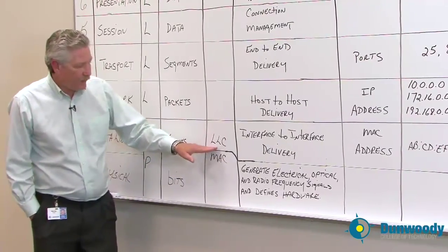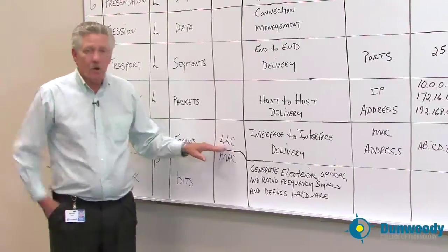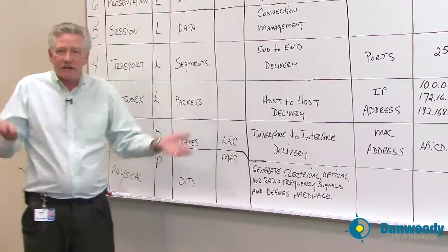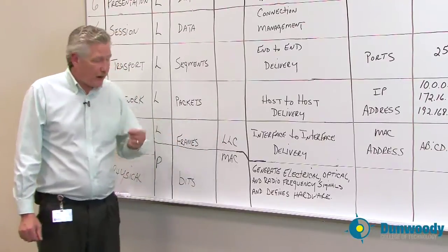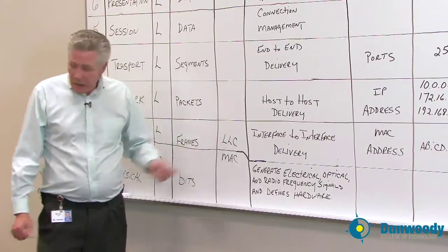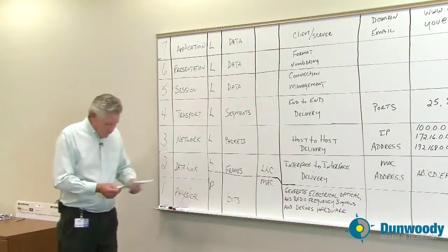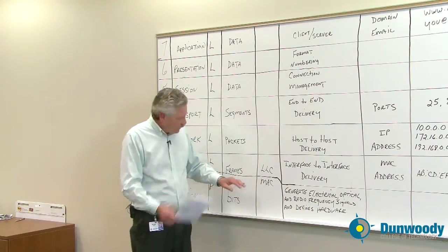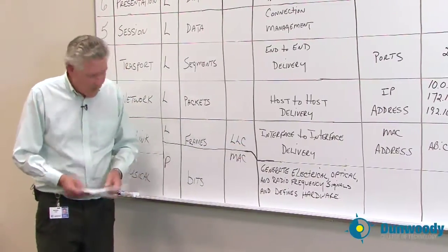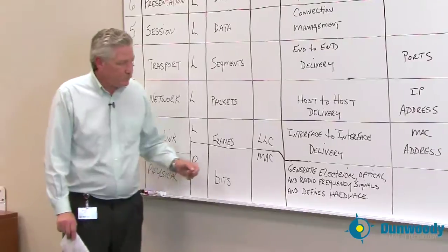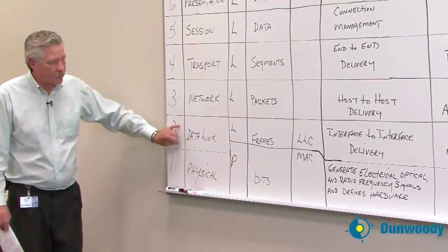The LLC takes care of things like message delineation — when to start and stop the message — error control or correction, frame synchronization, and flow control. So the data link layer does a lot of work.